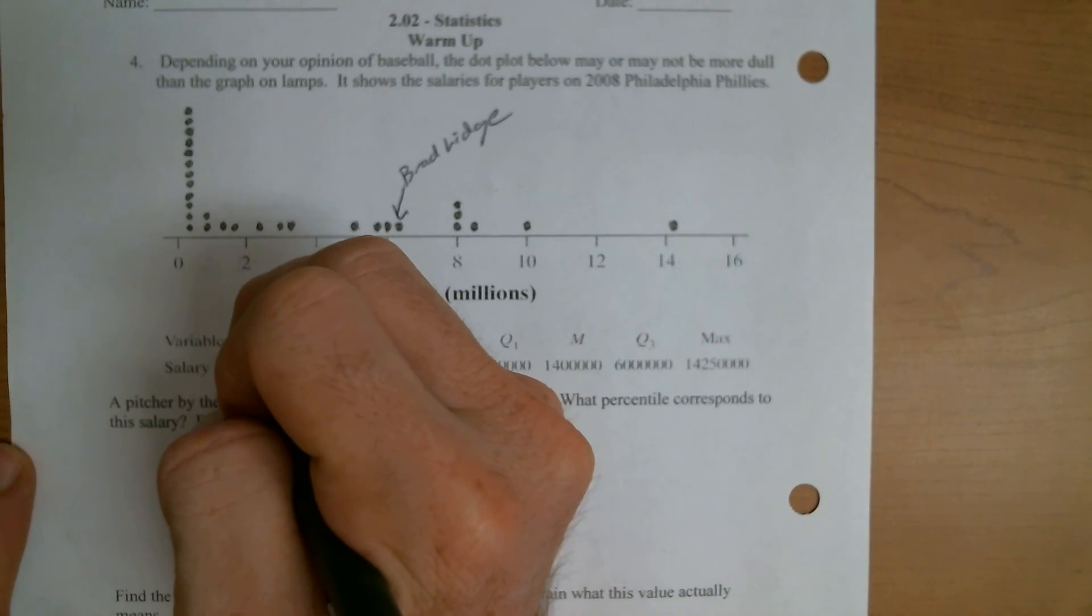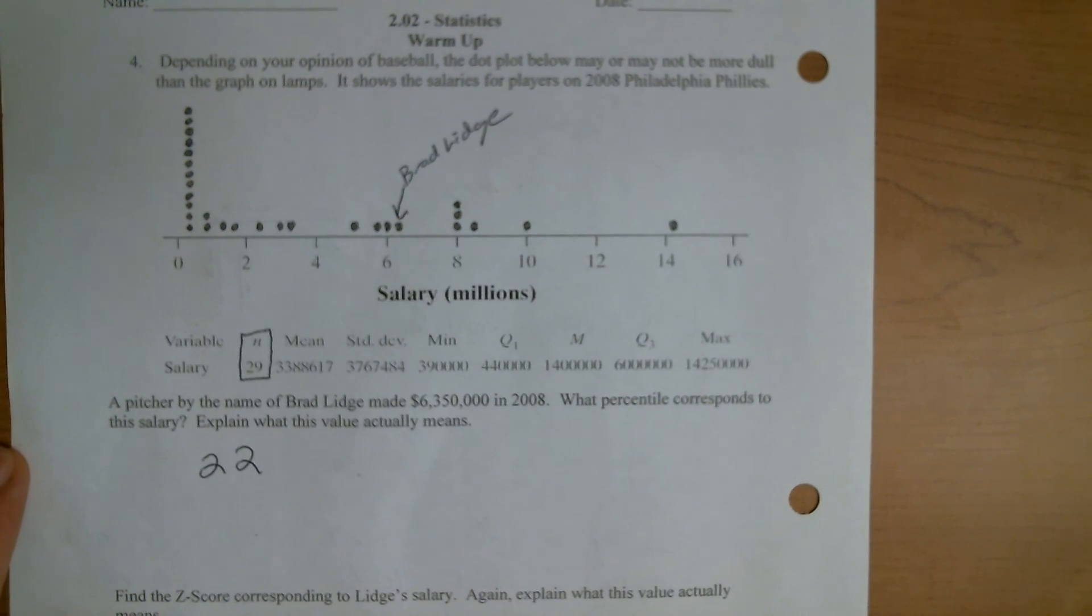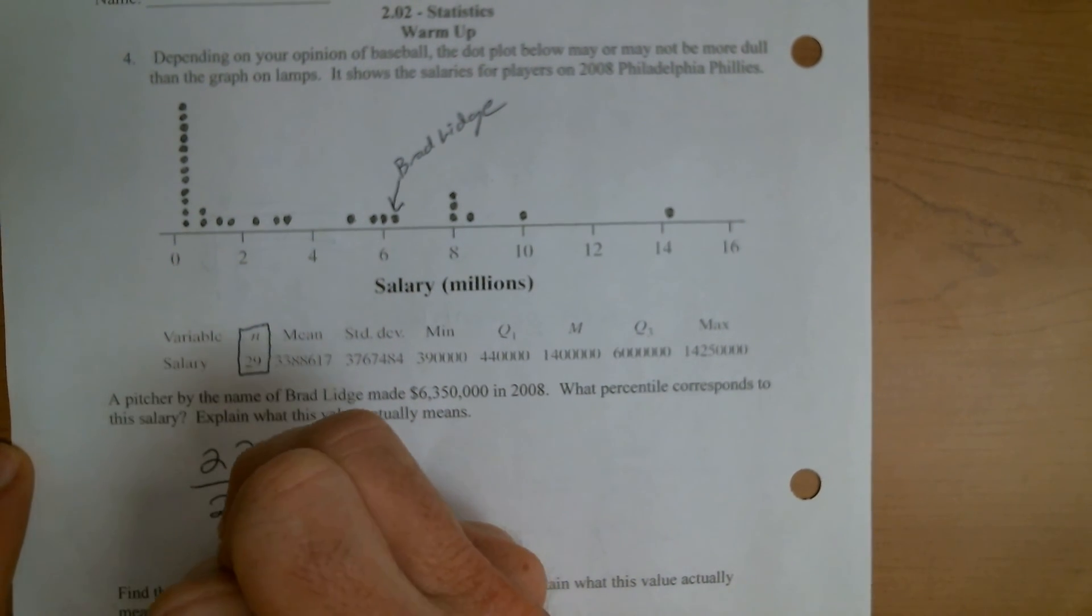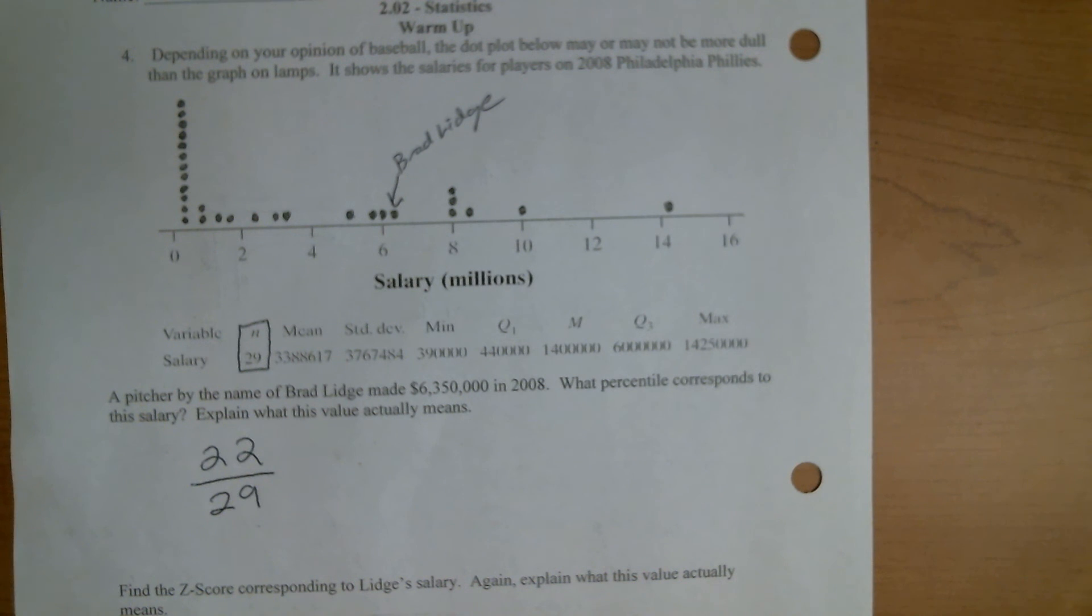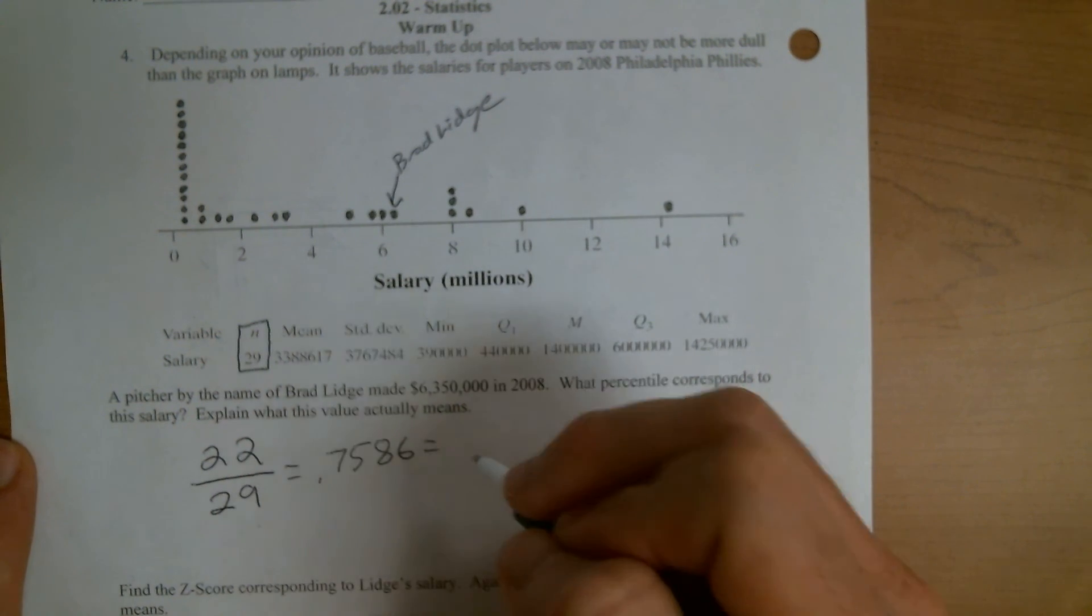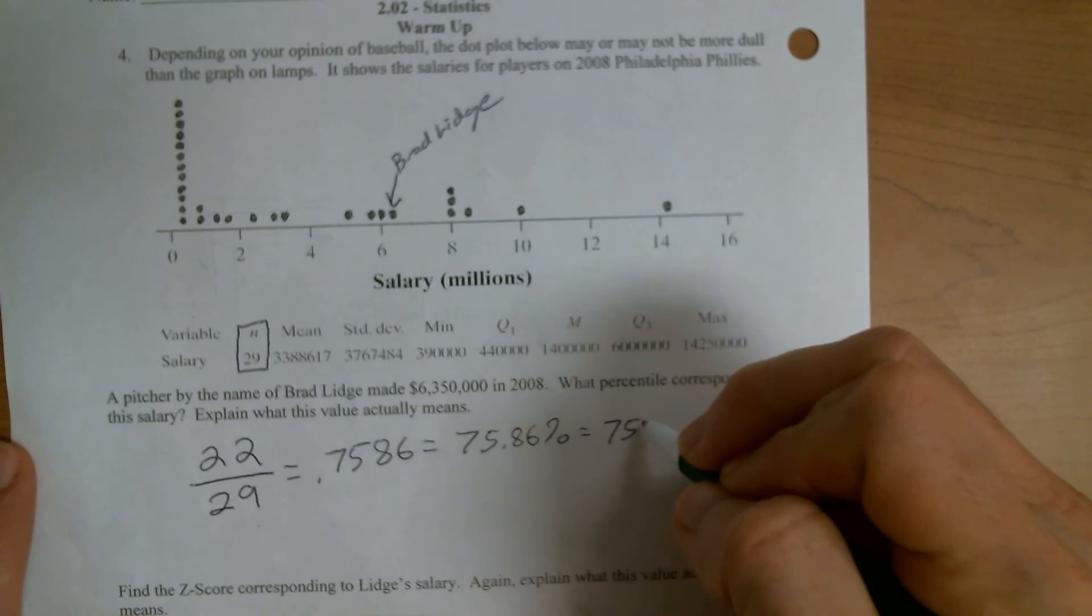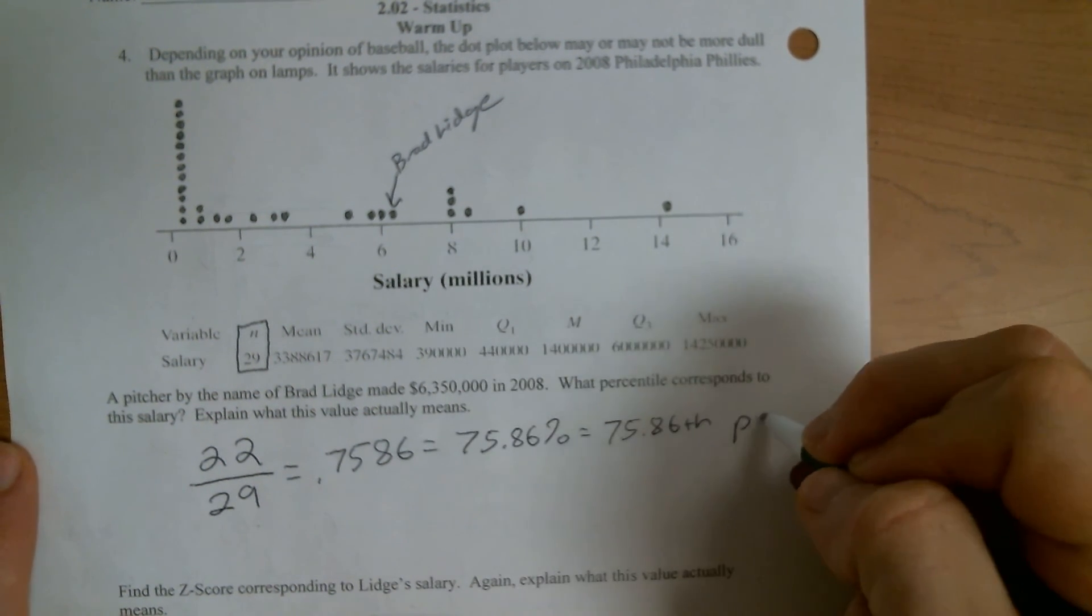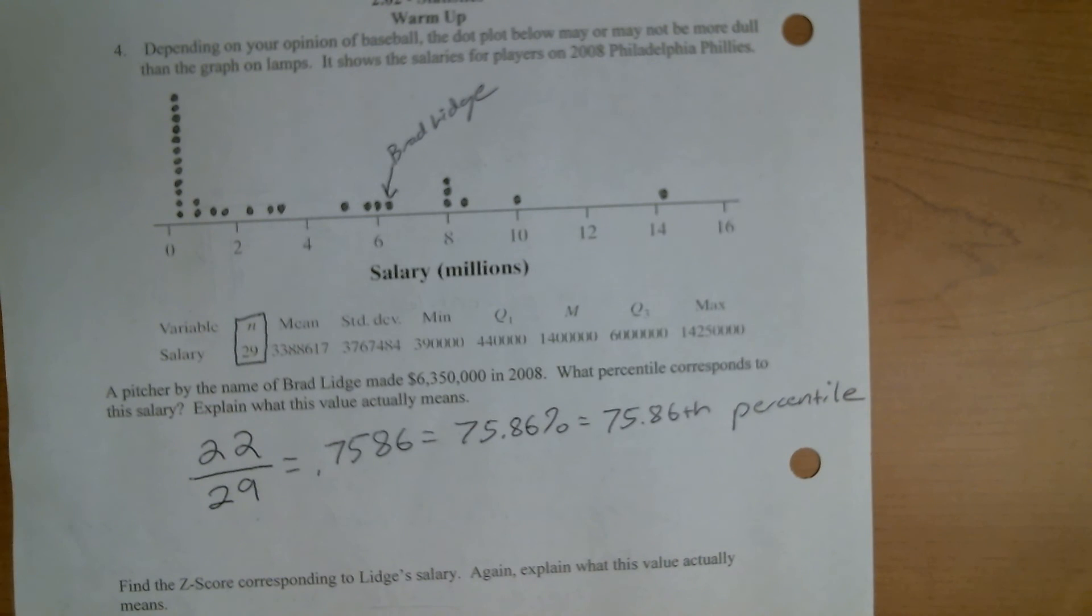So there are 22 dots below Brad there. And it tells us right here, n is always your sample size. It tells us there are 29 dots in total, if you don't feel like counting. So we've got 22 over 29, which works out to be 0.7586. So I'll write this as 0.7586, which you could also think as 75.86%, or you could think of that as the 75.86 percentile. I'm fine with any of those three. One is not going to get you more points than the other. This is okay. This is okay. This is okay. Whatever way you want to give it to me is fine by me.